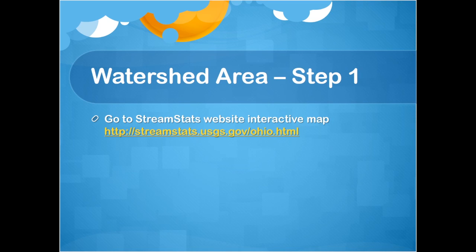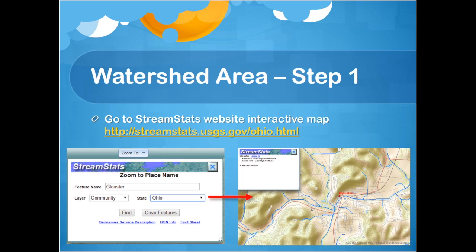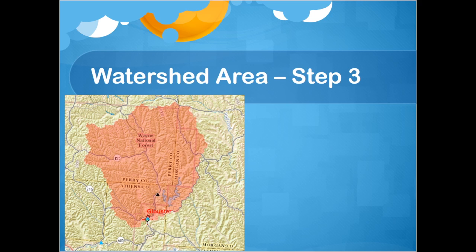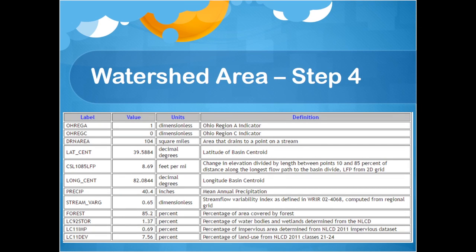To determine the watershed area, use the USGS StreamStats interactive map. Zoom to Gloucester, Ohio, and select the watershed delineation from a point tool. Zoom in on Sunday Creek at the point where it runs past Trimble High School and click on the stream. After the tool finishes calculating, the watershed is highlighted on the map in red. Click the Compute Basin Characteristics button, leave the default selections, and click Compute. From the table of basin characteristics generated, we find the drainage area is 104 square miles.